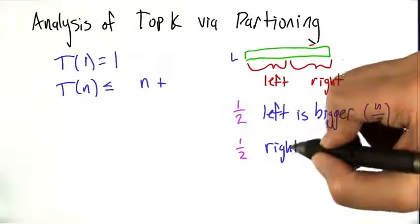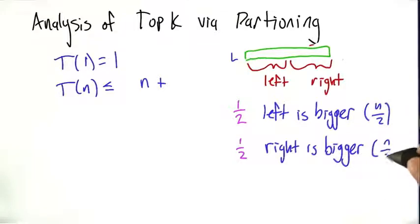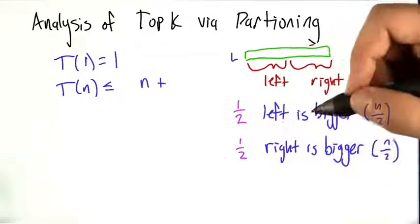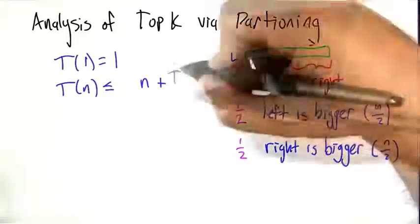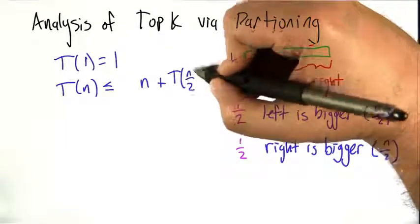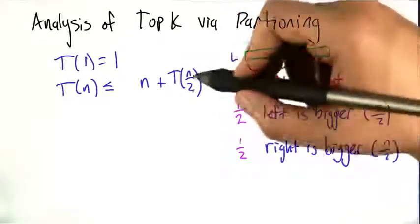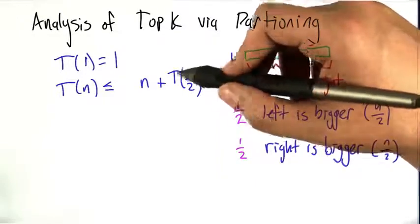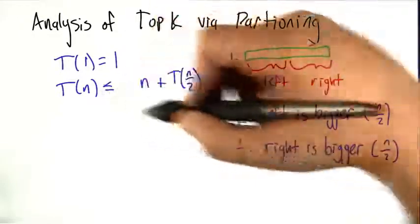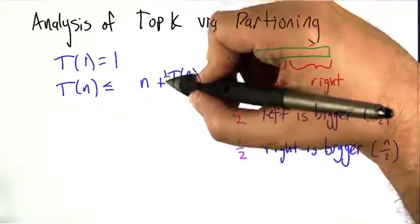And in half the cases, right is bigger, and again, bigger meaning that it's going to be at least size n over 2. So if the recursive algorithm gets called on the smaller half, then the work that it has to do is whatever the recursive running time is on a list of size n over 2 or smaller. This is an upper bound, and that happens with probability of half.